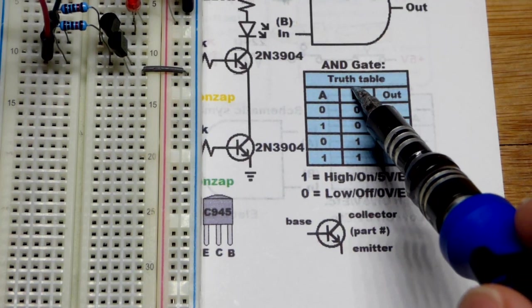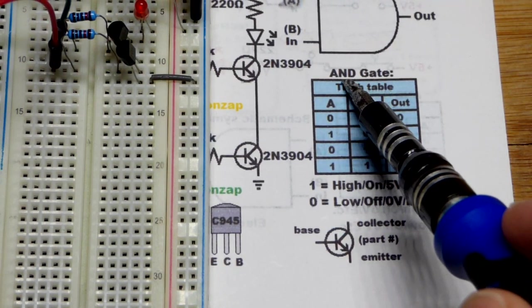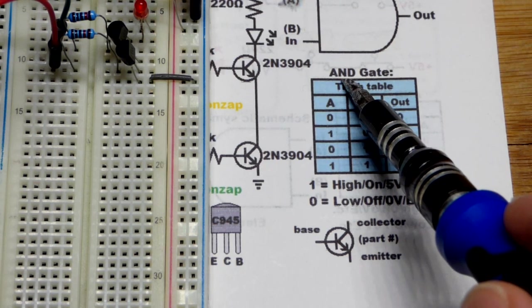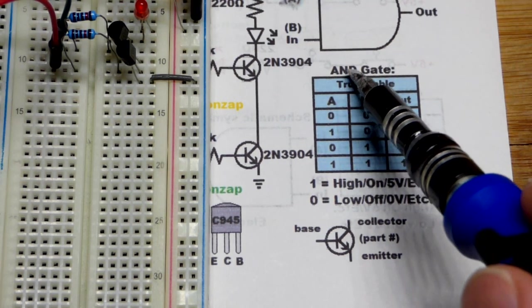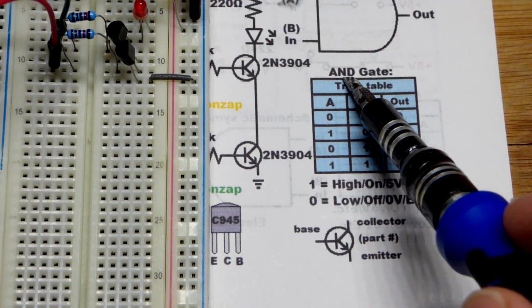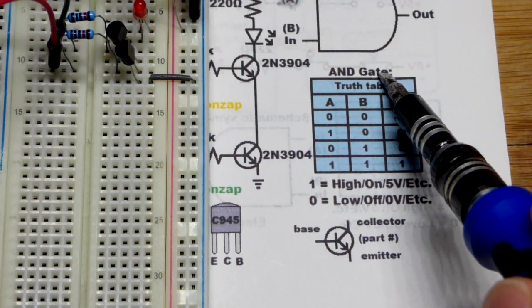And logic gates come with truth tables. So I believe there's six basic logic gates. Then there's other integrated circuits that use logic gates to make more advanced circuitry. Probably NAND gates. But in this case, we got the AND gate right there.